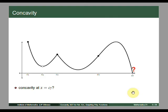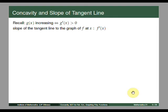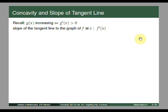We now know how a function that is concave up or concave down at a point or on an interval looks like. Now we can relate concavity and the slope of the tangent line. Recall from earlier lessons that if a function g(x) is increasing on an interval, its derivative is positive on that interval — g(x) increasing means g prime of x is greater than 0. Also, the slope of the tangent line to the graph of f at x is given by f prime of x. Now, if the function is concave up, the graph should look like this.